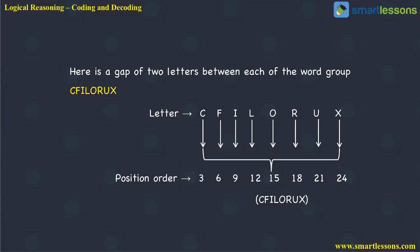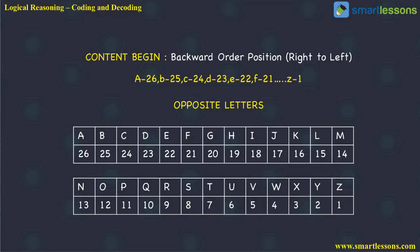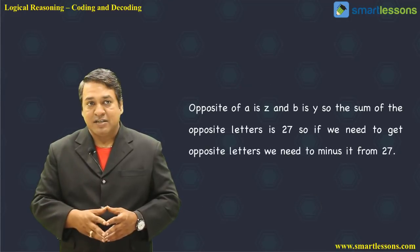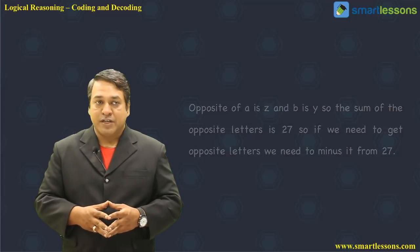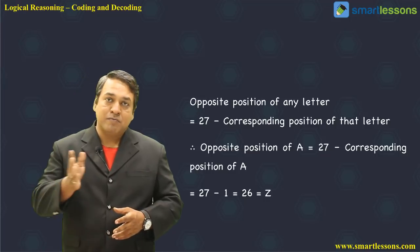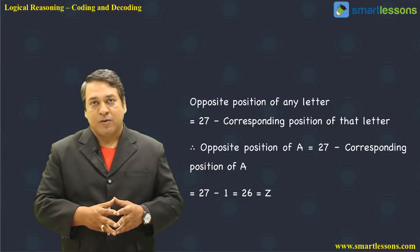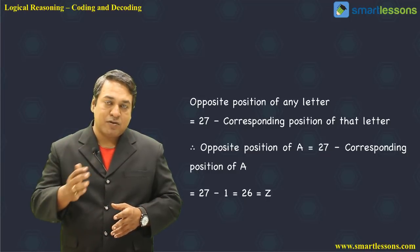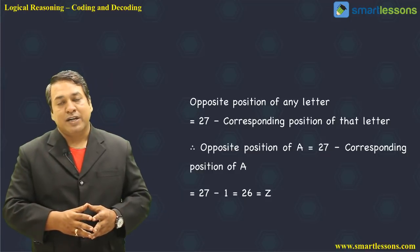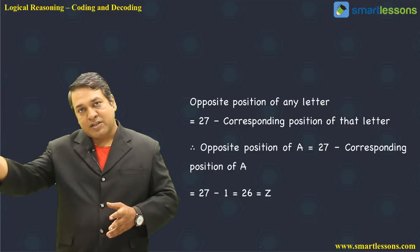We also need to remember the backward position of alphabets. From the reverse direction: if we start from Z as 1, then Y is 2, X is 3... and A will be 26. The opposite of A is Z, and the opposite of B is Y. The sum of opposite letters is 27. So if we need to find the opposite letter, we subtract the given number from 27. For example, A is 1; 27 minus 1 equals 26, which is Z.